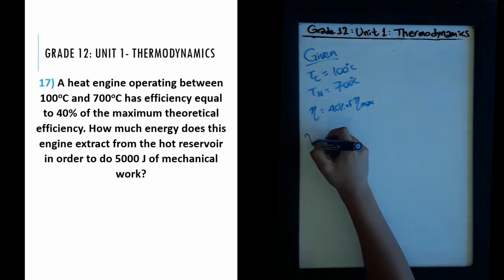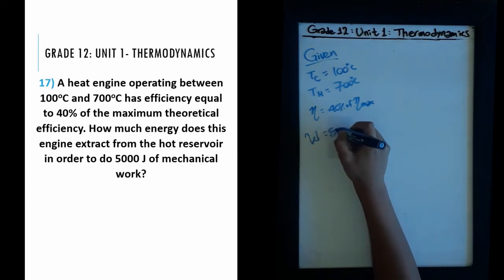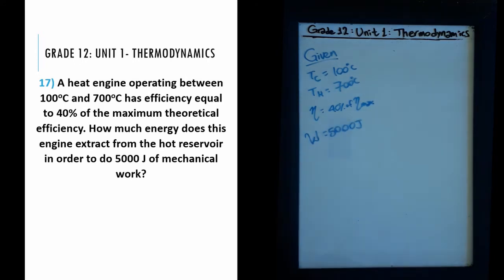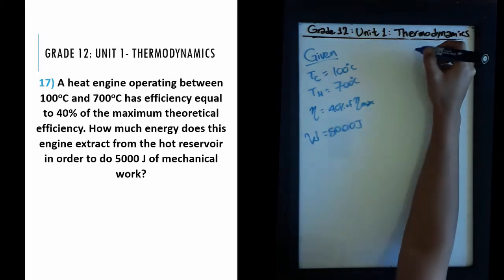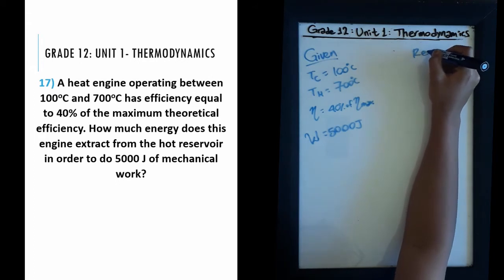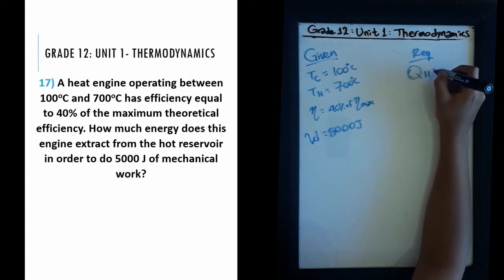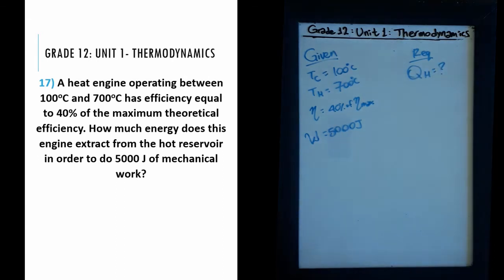We are also given the work to be 5000 joules of mechanical work. We are required to find the heat extracted from the hot reservoir, which we represent as Q_H. This question is talking about a heat engine — a machine that uses the laws of thermodynamics in order to create work.